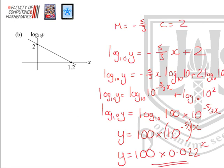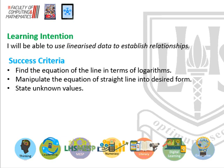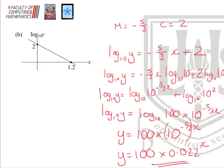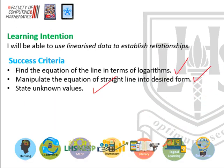Let's look at the success criteria. First, find the equation of the line in terms of the logarithms given — just deal with that equation from the graph. Then manipulate the equation of the straight line into its desired form. Finally, state the unknown values — your k and your n. Those are the three things we're looking to do. Thanks.